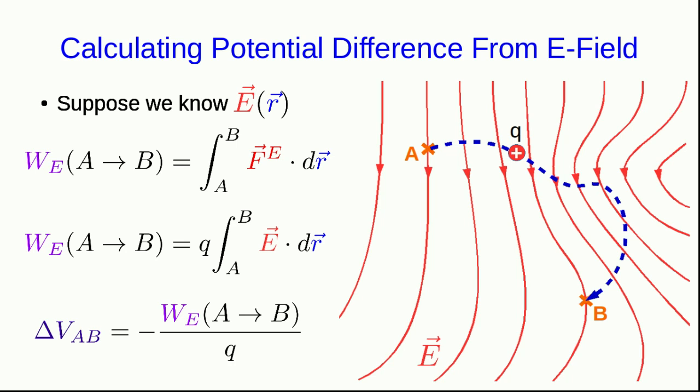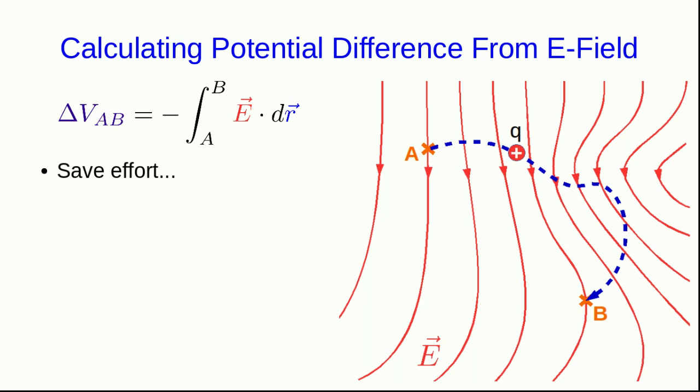Now, note that the potential difference from A to B is just the negative of that work divided by the charge. And so, that shows us that if we just divide out that charge, it disappears, we get that the potential difference from A to B is directly related to the E field by an integral along the path of the E field dotted with the path elements. So, this gives us a way of finding potential differences in the case that we already know the E field.